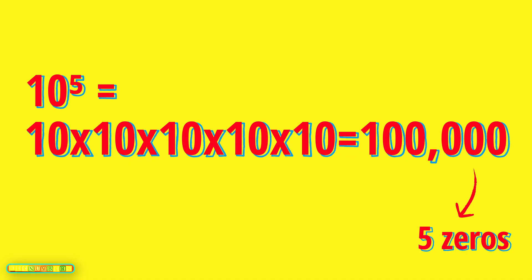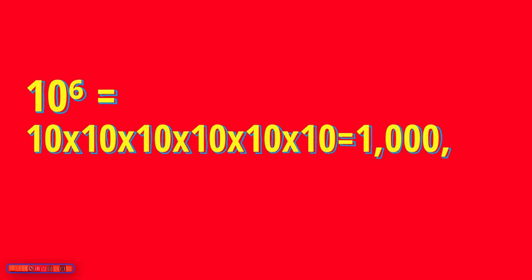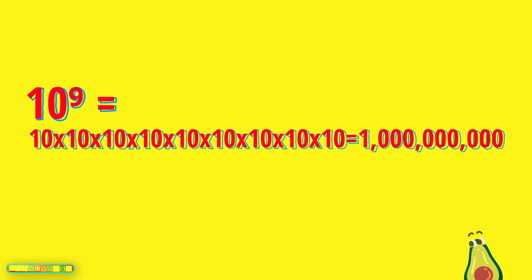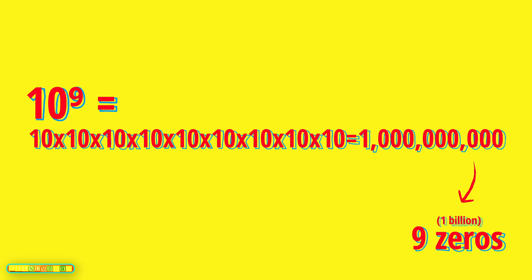There's a real pattern here. 10 to the 6th? It's just going to be 1,000,000 — 1 followed by 6 zeros. 10 to the 9th power? It's just going to be 1,000,000,000 — 1 followed by 9 zeros.